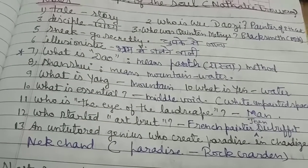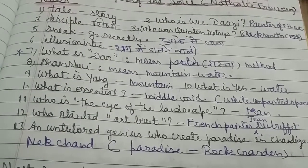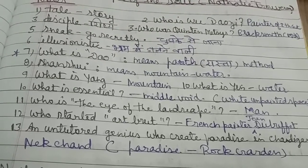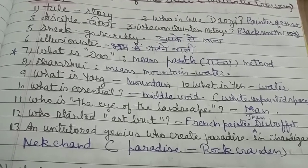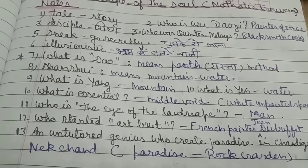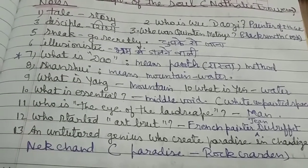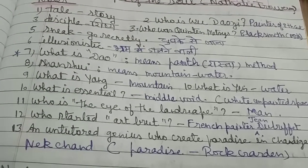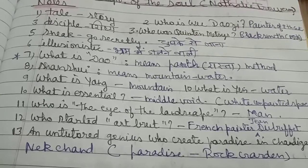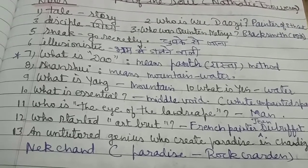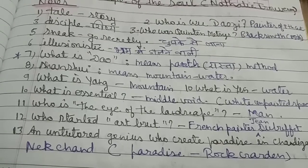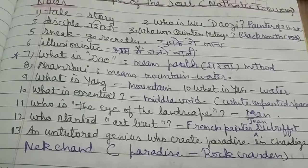Next, what is shanshui? Shanshui means mountain and water, and when we take them together it means landscape. What is yang? Yang means mountain. What is yin? Yin means water. What is essential? The middle void. Neither yang nor yin is most important — what is most important is the middle void.